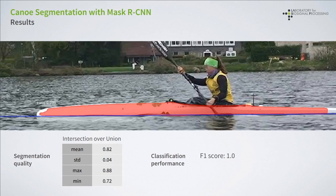We trained the network, and here you can see the result. On top, you can see the resulting canoe segmentation for a particular example. Although the segmentation itself is not our desired target, we applied some performance measures. We assessed the segmentation quality using the intersection over union and obtained a mean value of 0.82 with a small standard deviation of 0.04 on our validation set. We also assessed the classification performance using the F1 score, and obtained a perfect classification of the disciplines.